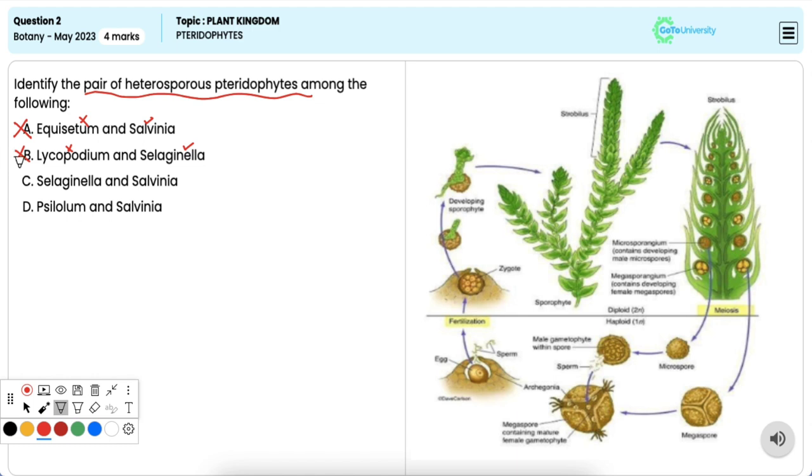Option C: Selaginella and Salvinia. These exhibit a heterosporous reproductive strategy, producing both macro and microspores. Heterospory allows for the production of two distinct types of spores, each with a specific function in the reproductive cycle.